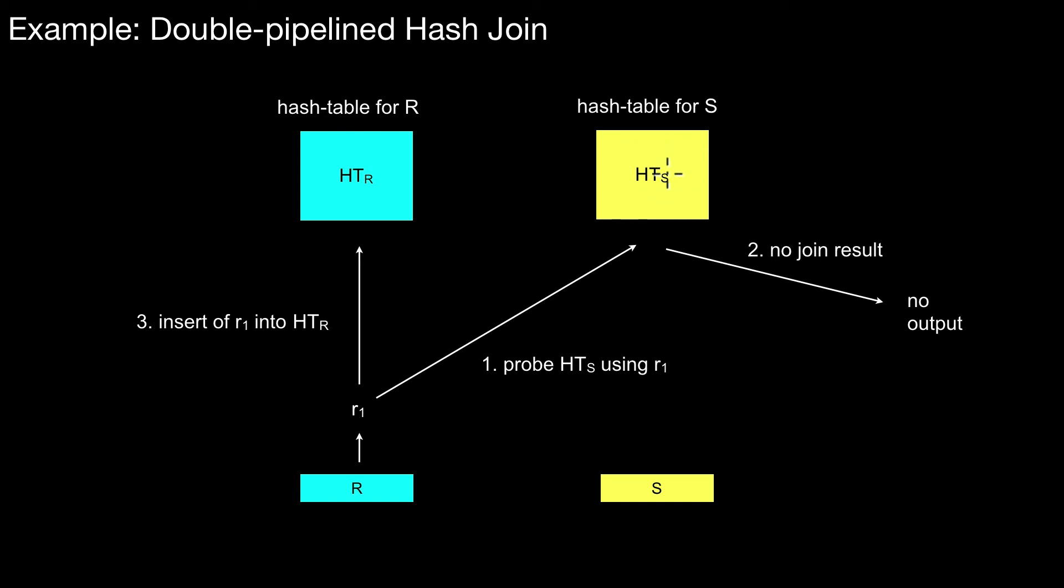It could even be an external memory structure. No one forces you to run that in main memory. You could do that on disk if you wanted. To generalize we should really say this is a double pipeline index join. It could be any index. Just replace hash table by index.